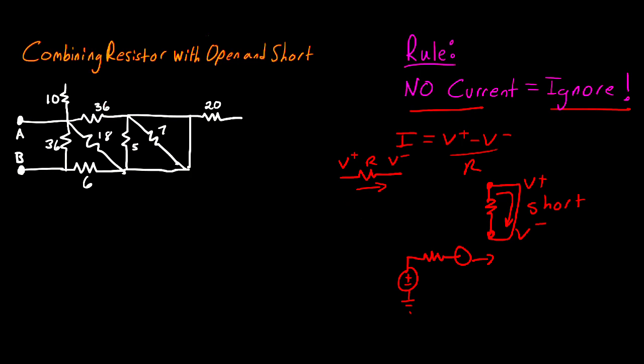Now that we've gone over the rules of open and short circuits, the last thing we need to consider before we begin the problem is where we're finding the resistance with respect to. In this case, we're given terminal pairs A and B, and this is where we're looking at the resistance from.